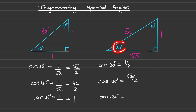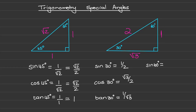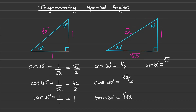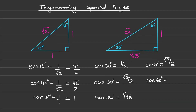The tan of 30 degrees is the opposite side divided by the adjacent side, so that is one over the square root of three. For the sine of 60 degrees, starting at 60 degrees, the length on the opposite side is the square root of three and the hypotenuse is two, so sine of 60 is square root of three over two. The cosine of 60 degrees is the adjacent side over the hypotenuse, so that is one half.